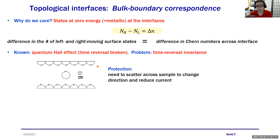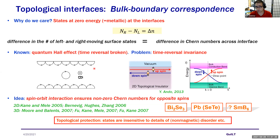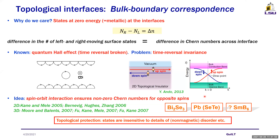With time-reversal invariance, for every state traveling left there is one traveling right, so they can scatter into each other and protection disappears. The idea behind topological insulators is to engineer a system with spin-orbit interaction, which locks spin to the direction of momentum. Then, for example, up-spin moves right and down-spin moves left. In that case, non-magnetic scattering cannot destroy the current, and we define a Chern number for opposite spins — an idea explored starting about 15 years ago.